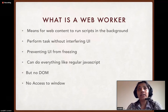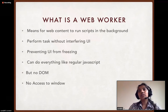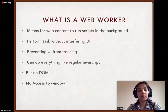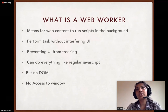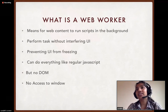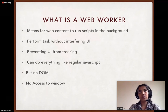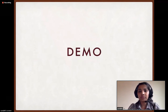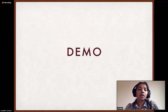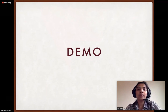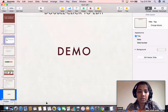Web workers give you a way of running JavaScript in the background without impacting or interfering with your UI. A web worker can do pretty much everything that JavaScript can do — it can make Ajax calls, fetch data from the backend, and do storage. But there are limitations: it doesn't have access to the DOM tree and it doesn't have access to the window object.